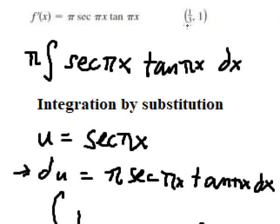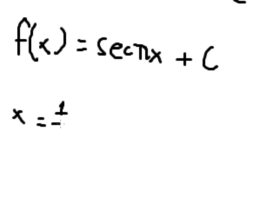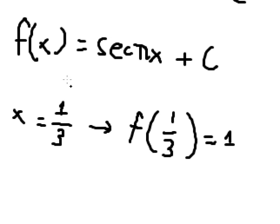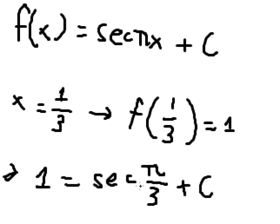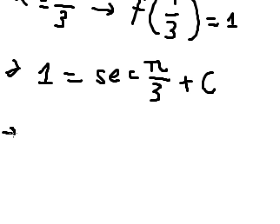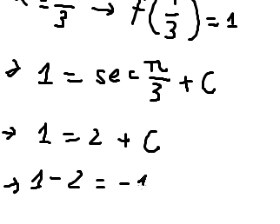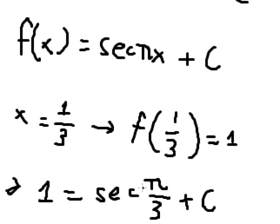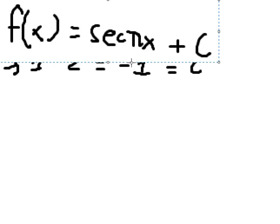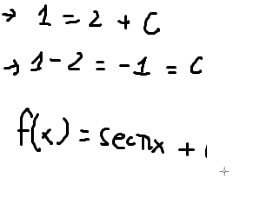About u, that is secant of bx. So now we have the function: secant of bx plus C. We have the condition: when x equals 1/3, f of 1/3 equals 1. Putting 1/3 in, we have 1 equals secant of b over 3 plus C. That gives us 2, so C equals 1 minus 2 equals negative 1. We go back and put negative 1 in for C, and we have the final answer.